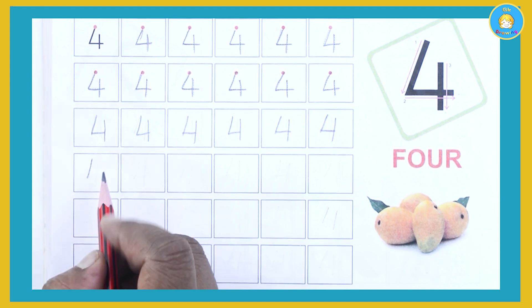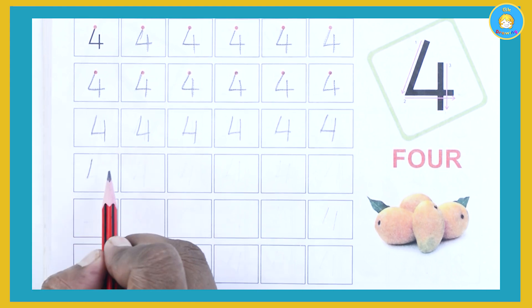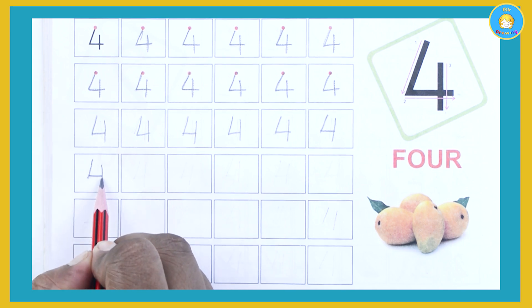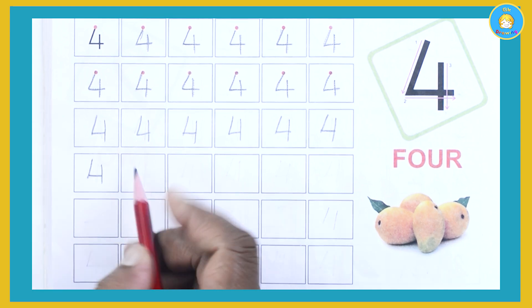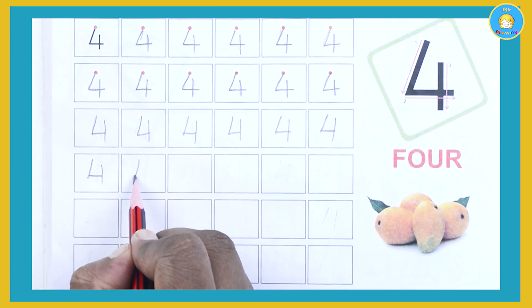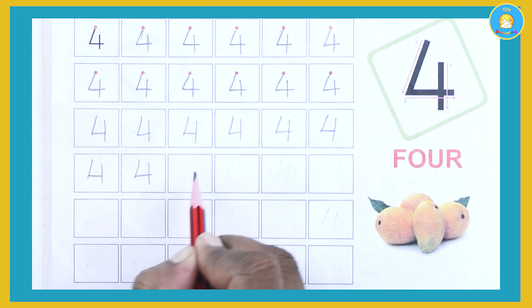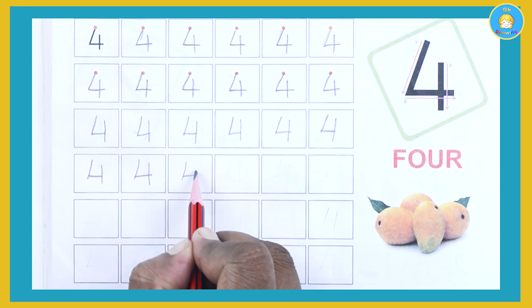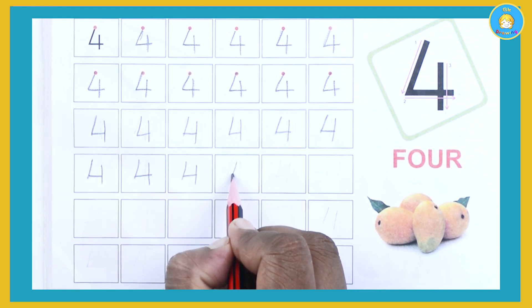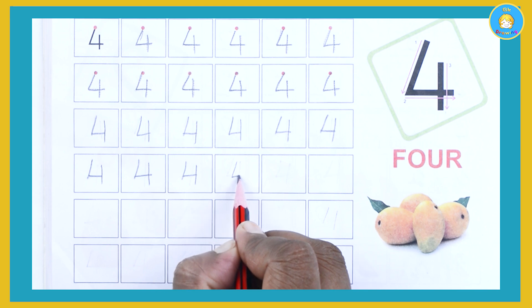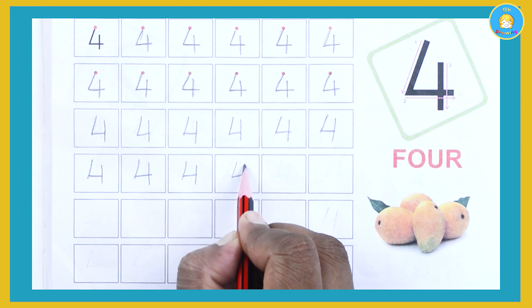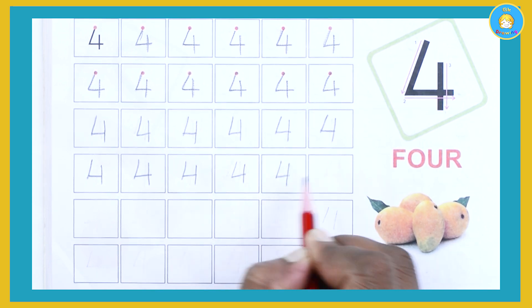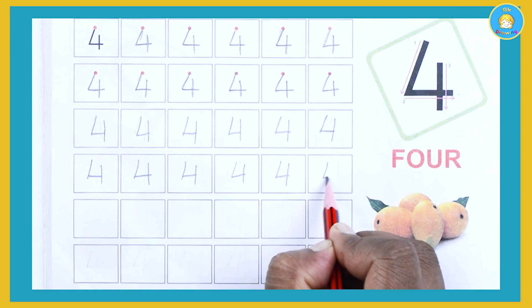Letting line, sleeping line and standing line. It's number 4. Setting line, sleeping line and standing line. It's number 4.